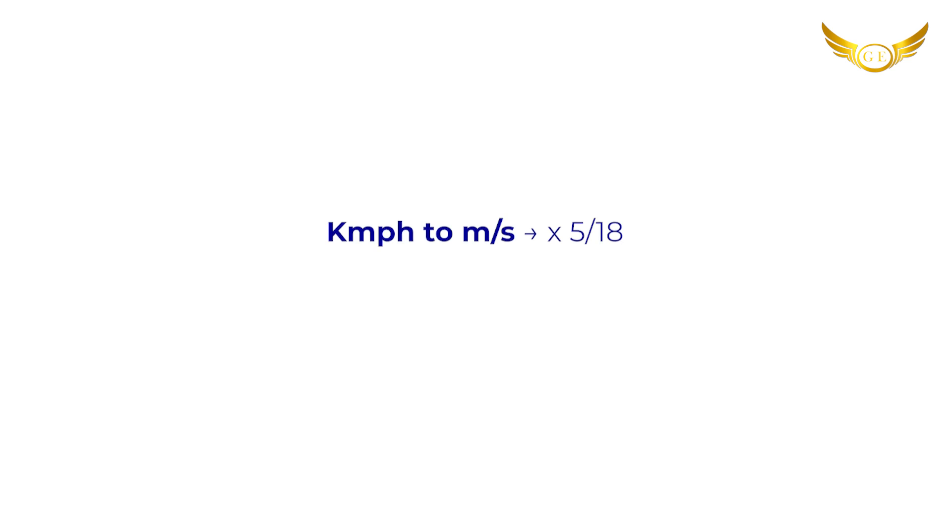Let's begin with the conversion topic. Whenever we solve questions in Maths, all units of measurement should be the same. If it is in km per hour, everything should be in km and hours; if it is in m per second, all units should be in metres or seconds. To convert km per hour to m per second, multiply by 5/18. To convert m per second to km per hour, multiply by 18/5.